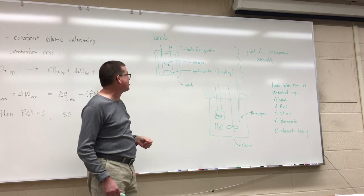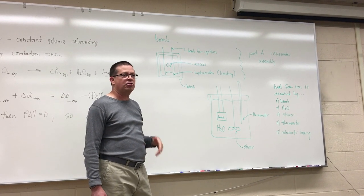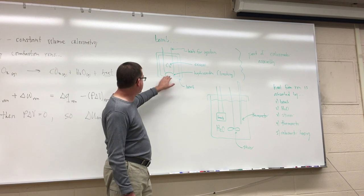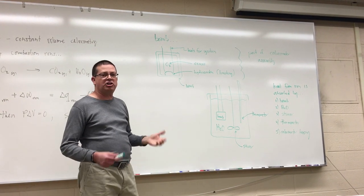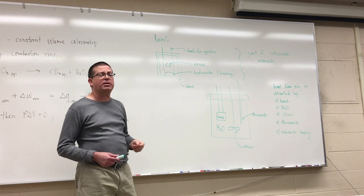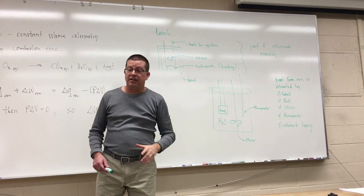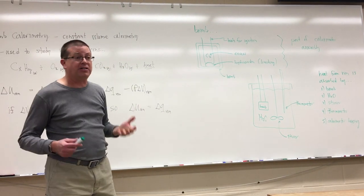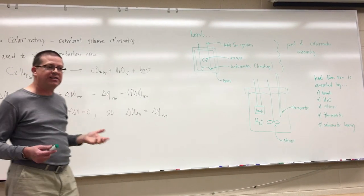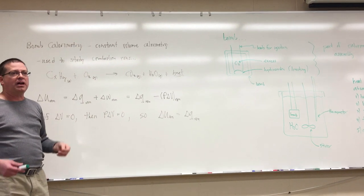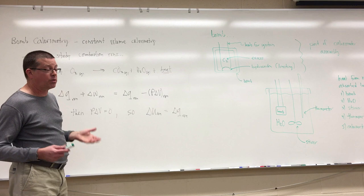We need the leads to ignite the reaction. We also backfill the bomb with high-pressure oxygen gas to ensure oxygen is the excess reactant, making the hydrocarbon plug the limiting reactant. Then we apply a spark through the leads to initiate the reaction — essentially a miniature explosion inside the bomb. Because the interior volume of the bomb is fixed, the gases cannot expand, giving us delta v equal to zero. That's why we call this constant volume calorimetry: with Δv = 0, the work term disappears and essentially 100% of the reaction energy is heat.